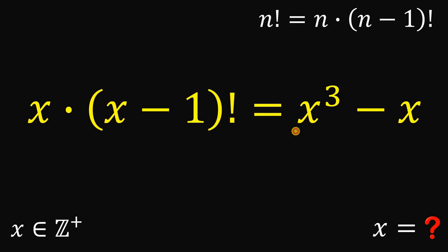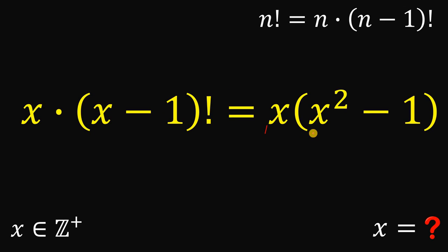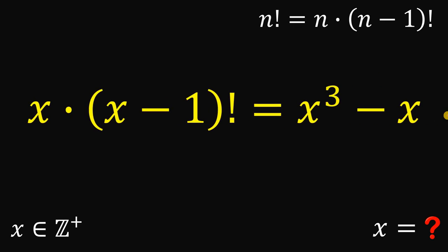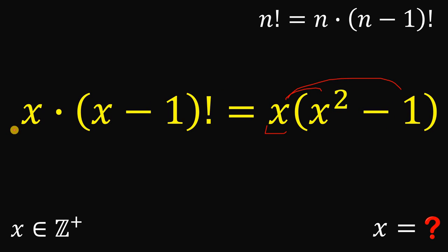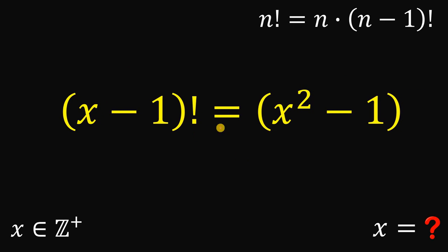Why do we do that? Because on the right hand side of our equation, we can also factor out x. If we do that, we get x multiplied by x squared minus 1. Since both sides now share a common factor of x, we can cancel x on both sides, and our equation becomes: x minus 1 factorial equals x squared minus 1.